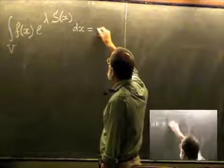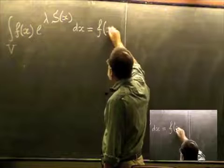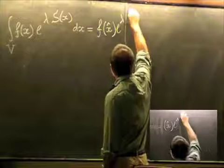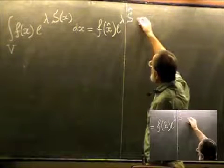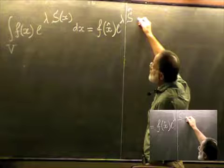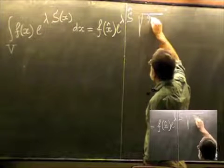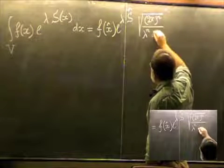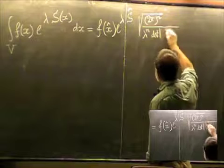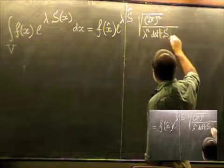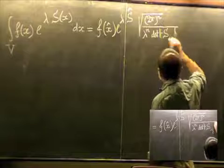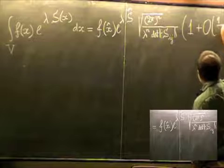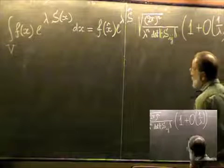The asymptotics is f(x̂) exp(λŜ) times sqrt((2π)^n / (λ^n det(−S_{ij}))), and again the remainder is of order 1/λ.